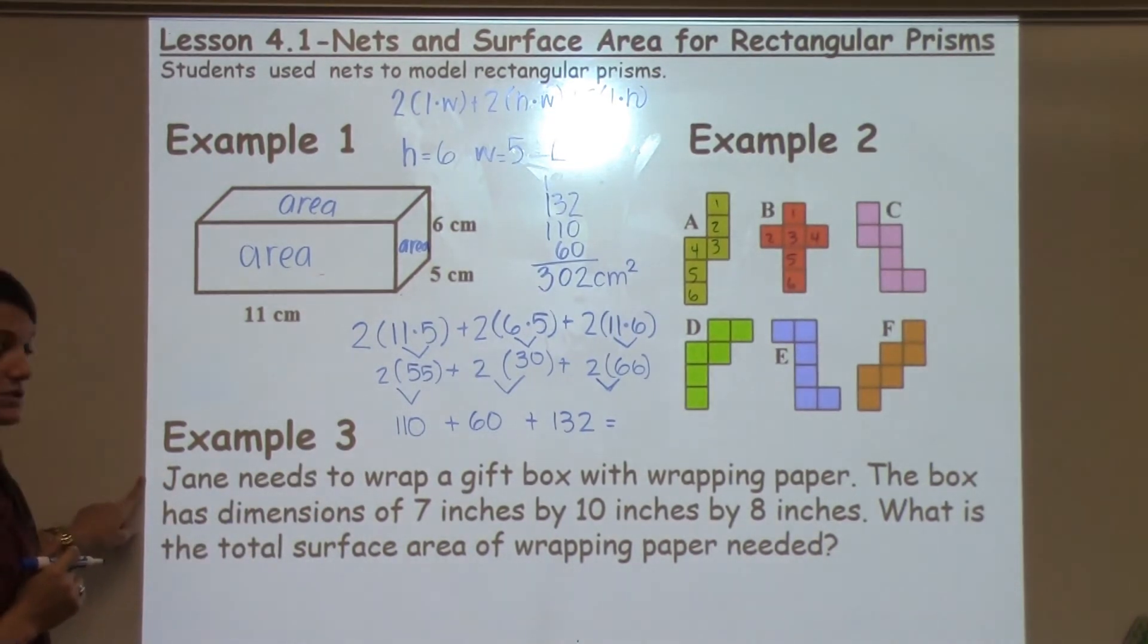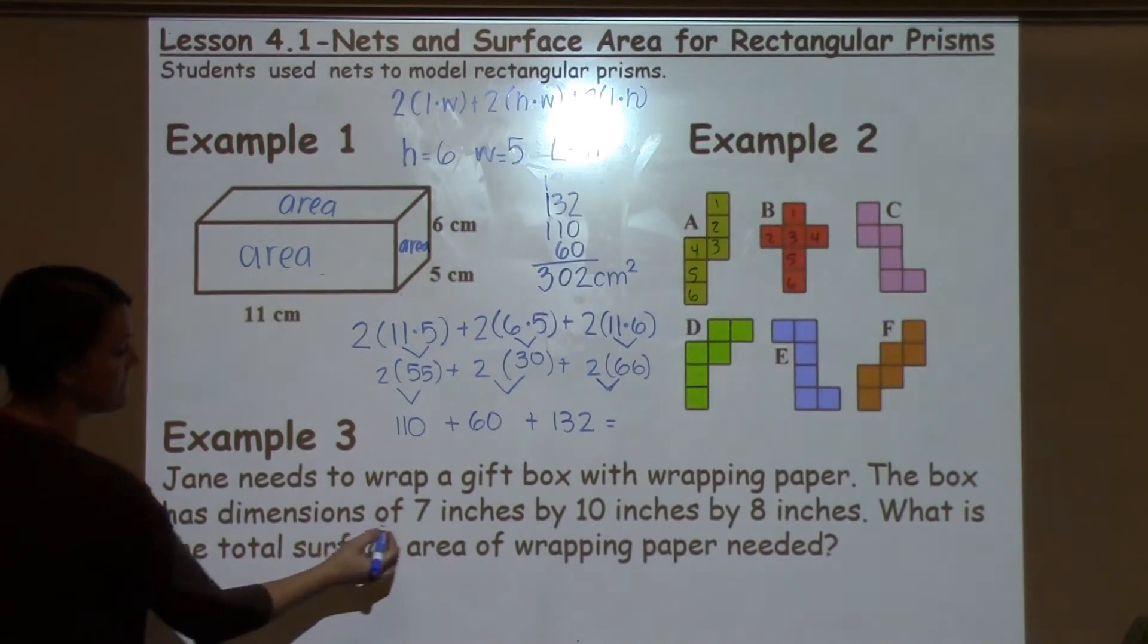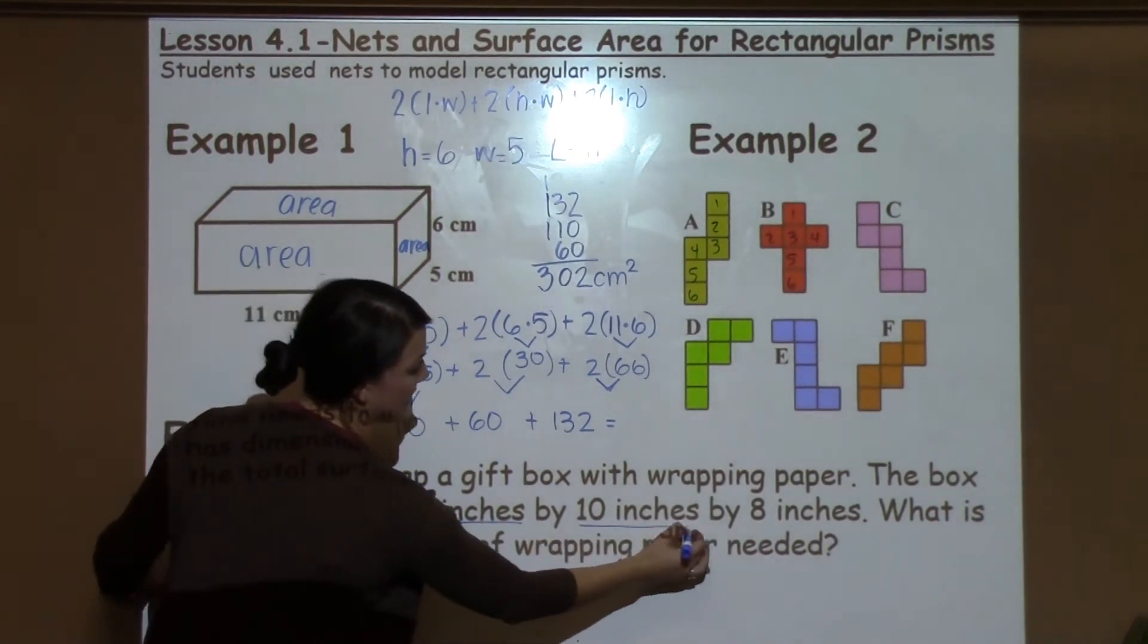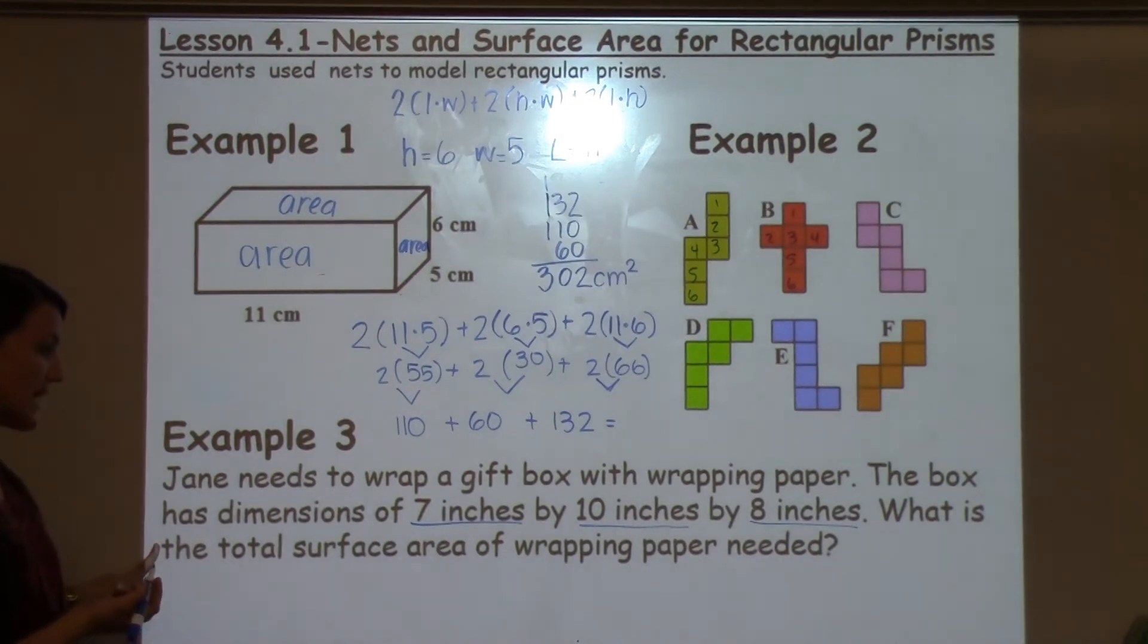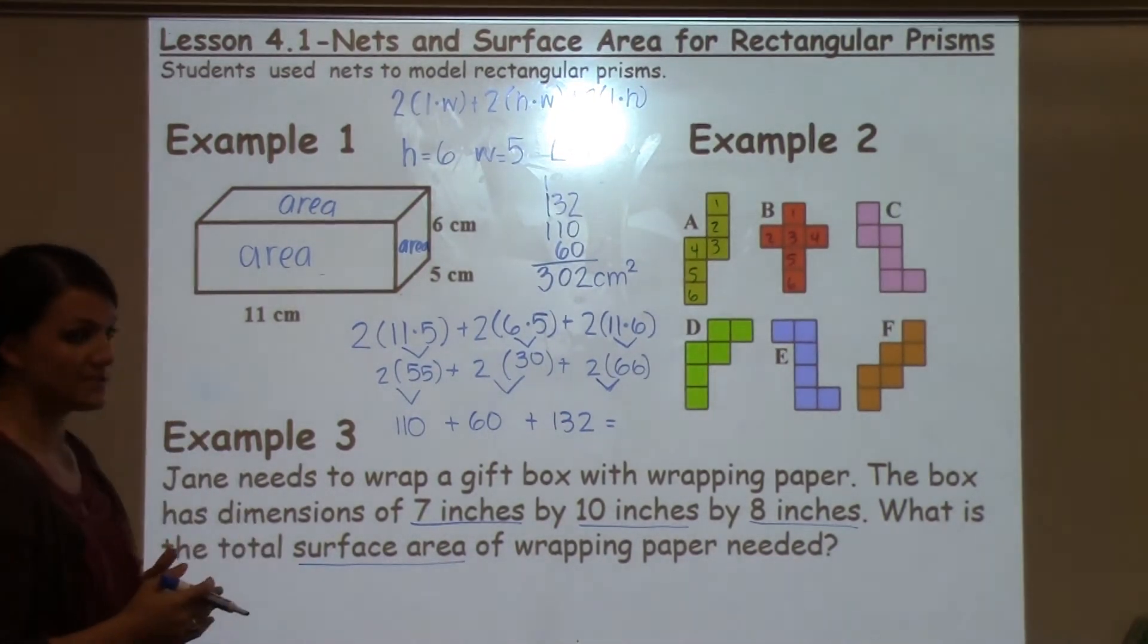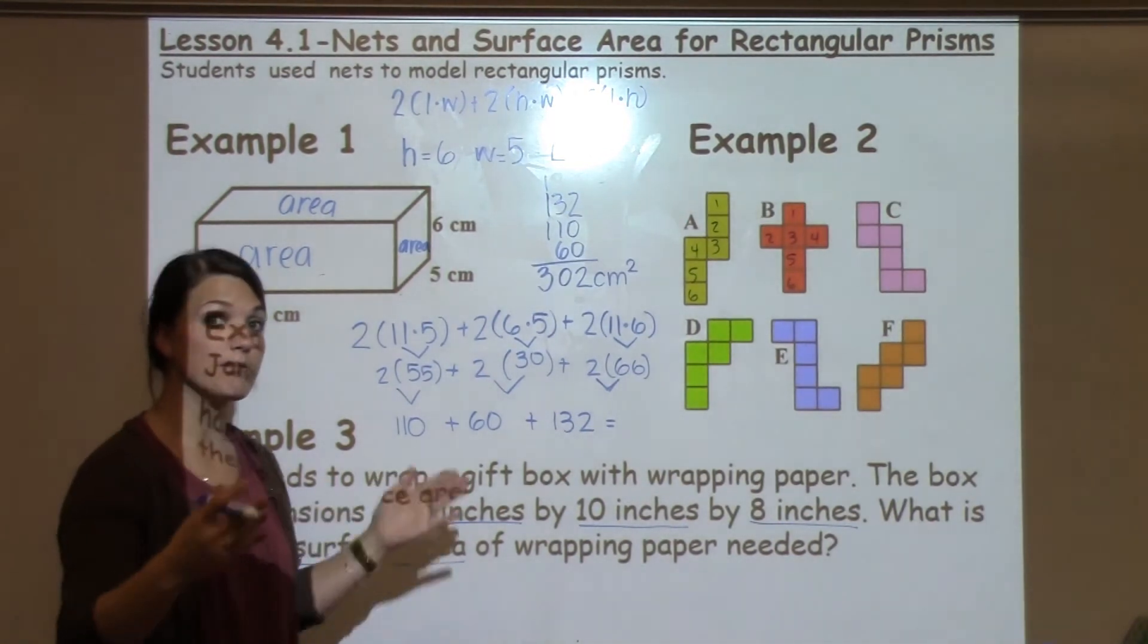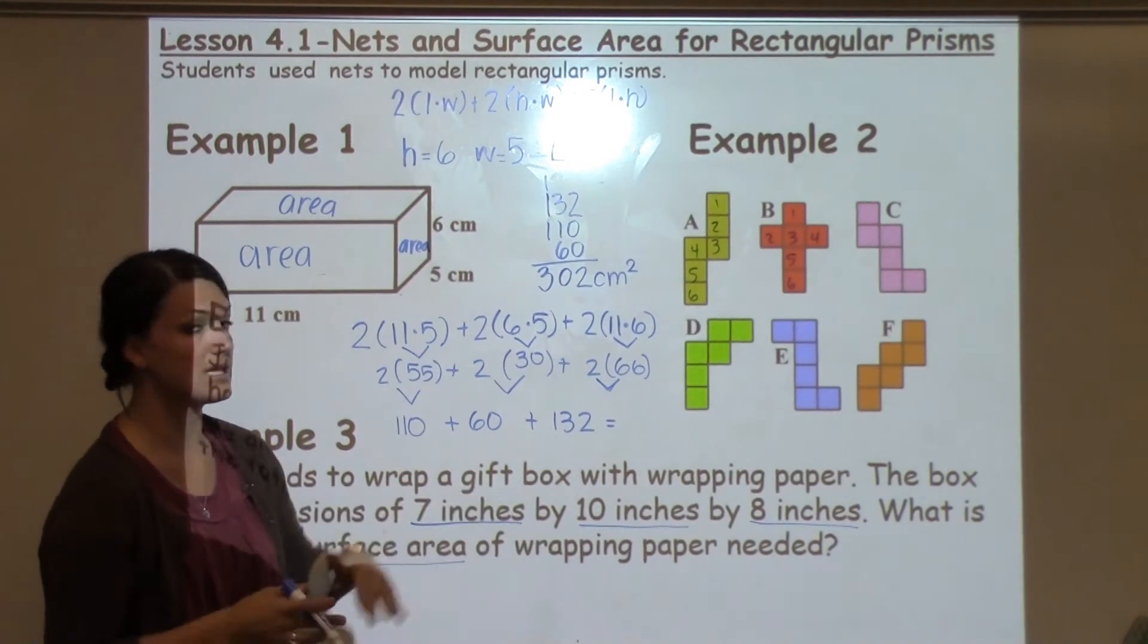Example three is another one where we're going to use the formula. It says, Jane needs to wrap a gift box with wrapping paper. The box has dimensions of 7 inches by 10 inches by 8 inches. What is the total surface area of the wrapping paper needed? So again, we're working with the surface area and it is a gift box, which I can assume is going to be a rectangular prism with these dimensions.